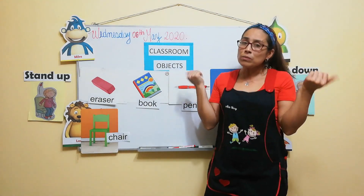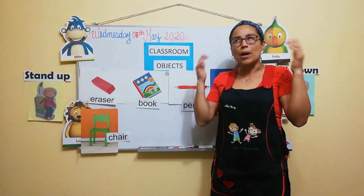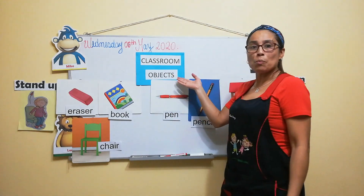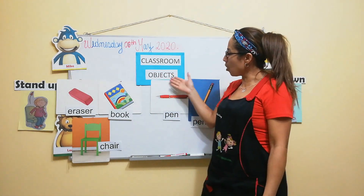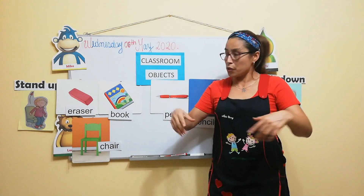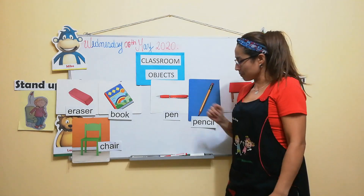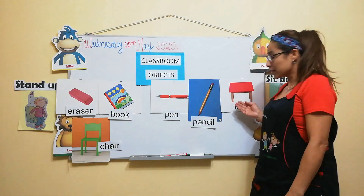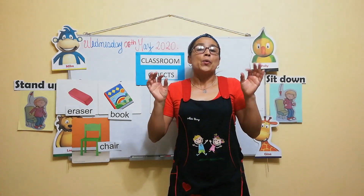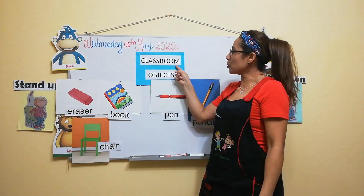So, do you know what is the topic? All right. The topic is classroom objects. All right. Classroom objects. All right. Classroom objects. There are classroom objects. Okay. In my classroom, in my classroom, there are eraser, book, pen, pencil, table, and chair. Okay. So, we are going to learn new vocabulary about classroom objects.